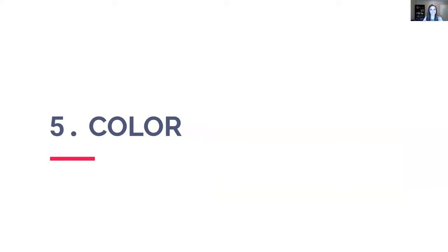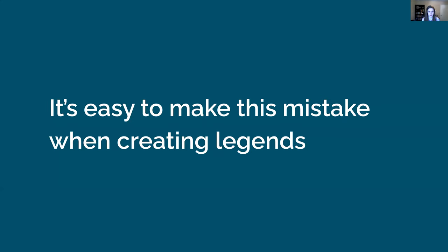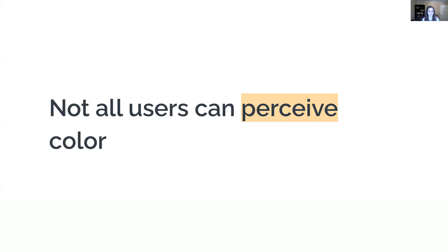Now we're going to talk about color. First, don't use color alone to convey meaning. It's easy to make this mistake when creating legends and keys for tables, graphs, and charts. Using only color to distinguish information is a problem — not everyone can perceive color. Some people with color deficits have trouble differentiating between specific colors such as red and green. Screen readers also do not announce color, so the user is not able to access the meaning you're trying to convey.